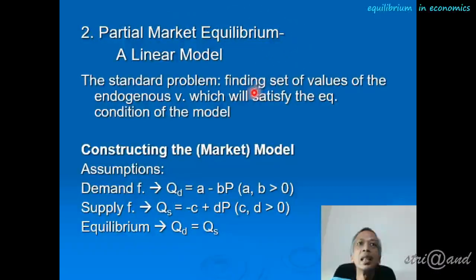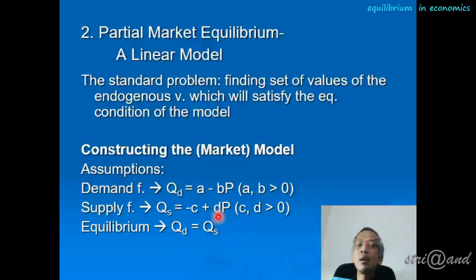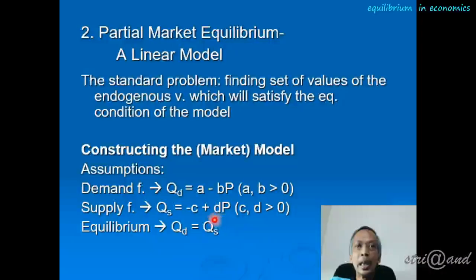In market equilibrium analysis, the standard problem is finding the values of the endogenous variables that satisfy the equilibrium condition. For example, with a linear model where the demand function is Qd = a − bP and the supply function is Qs = −c + dP, the requirement for equilibrium is that quantity demanded equals quantity supplied.